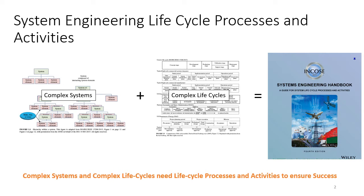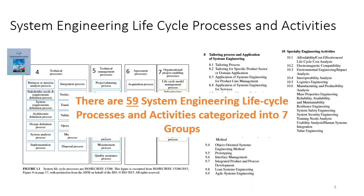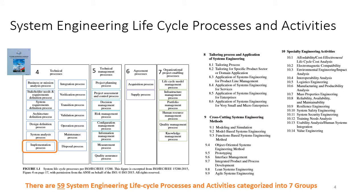As we introduced in the previous videos, the systems that we're building are inherently complex and they're going to be developed and operated in complex life cycles. To manage that complexity, the system engineering approach has life cycle processes and activities that can be used to ensure success. The System Engineering Handbook has identified 59 system engineering life cycle processes and activities, categorized into seven groups. The subject of this short video is the implementation process, part of the technical processes in chapter 4.